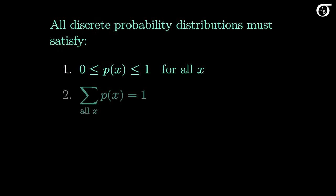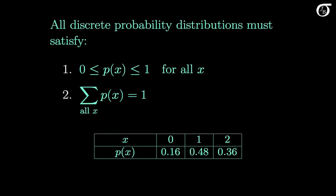All discrete probability distributions must satisfy two conditions. First, all of the probabilities must lie between 0 and 1 — as a general rule, probabilities must be between 0 and 1. Second, the sum of all probabilities must equal 1. We are listing all possible values of x, so the sum of those probabilities must equal 1 because one of those values must occur. Looking at the probability distribution for our example, we see that those conditions are in fact satisfied — all three probabilities lie between 0 and 1, and they add to 1.